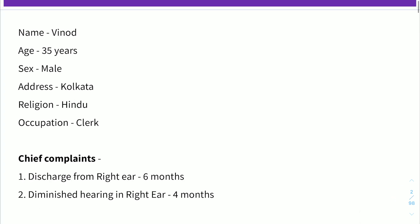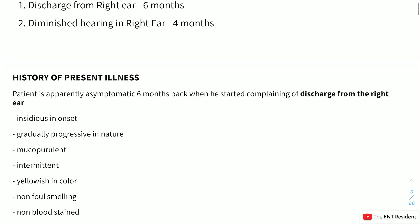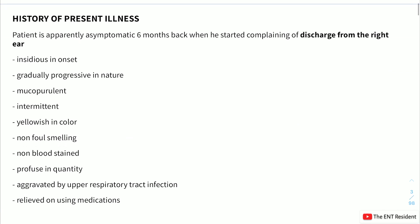A patient named Vinod, aged 35 years, male, living in Kolkata, Hindu by religion and clerk by occupation, presented with chief complaints of discharge from the right ear for six months and diminished hearing in the right ear for four months. Patient was apparently asymptomatic six months back when he started complaining of discharge from the right ear.